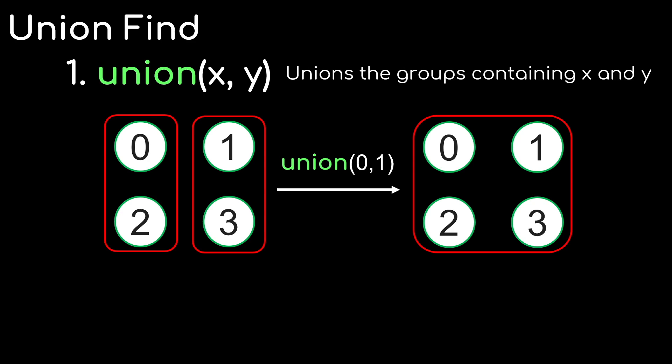For example, we can start with 0 and 2 belonging to the same group and 1 and 3 belonging to the same group, and when we call this function union 0, 1, it joins or unions the groups containing 0 and 1. So the final result would be all four objects belonging to the same group.